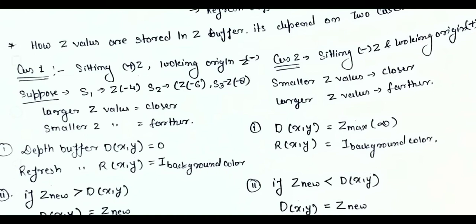In Case 1 (viewing from positive z-axis), the larger z-value is closer to the viewport and the smaller z-value is farther. For example, with S1 = -4, S2 = -6, S3 = -8: -4 is the largest so S1 is closest, and -8 is the smallest so S3 is farthest. In Case 2, the smaller z-value is closer and the larger is farther.